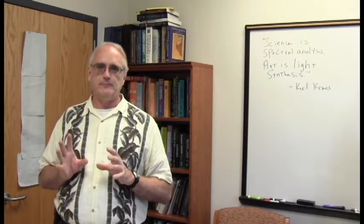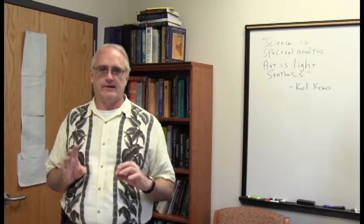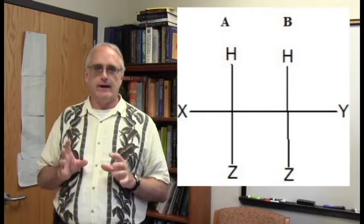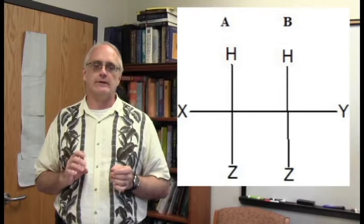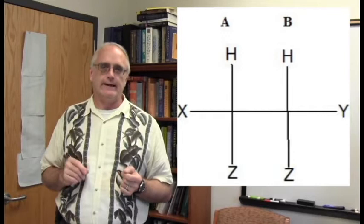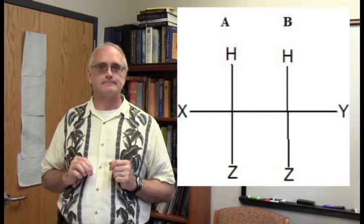When I talk about this stuff with students, I find it useful to make up some simple fake molecules using X's and Y's to represent other atoms that aren't hydrogen. For our first one, I'm going to make up a molecule that is not symmetric — we see an X and a Y on the left and right to make sure there's no mirror plane. X, Y, and Z are not hydrogens. There are only two hydrogens to look at here, labeled HA and HB.